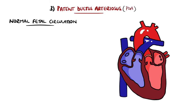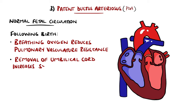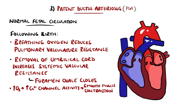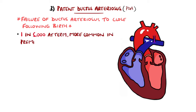Following birth, things normally change quickly. The first breath introduces oxygen, causing pulmonary vascular resistance to drop. Closure of the umbilical cord increases systemic vascular resistance, raising left atrial pressure above right atrial pressure and closing the foramen ovale. Oxygenated blood in the ductus arteriosus causes increased calcium channel activity, giving muscle contraction and closure of the ductus arteriosus typically within 2 to 3 weeks. A patent ductus arteriosus (PDA) is one that doesn't close after birth — occurring in 1 in 5,000 at-term births but much more common in prematurity, making up 9–12% of congenital heart disease.